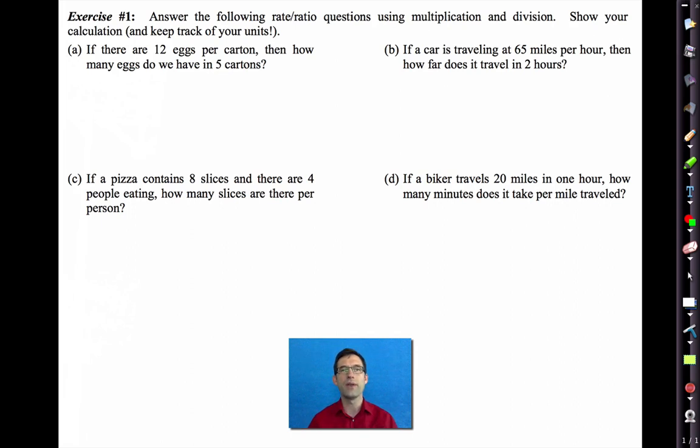This is conceivably a problem that you could have been doing as early as third or fourth grade. It says answer the following rate/ratio questions using multiplication and division. Show your calculation and keep track of your units. Well, let's take a look at number one, letter A. If there are 12 eggs per carton, a dozen eggs per carton, then how many eggs do we have in five cartons? What would you do to figure this out? Pause the video now just for a moment to think about this.